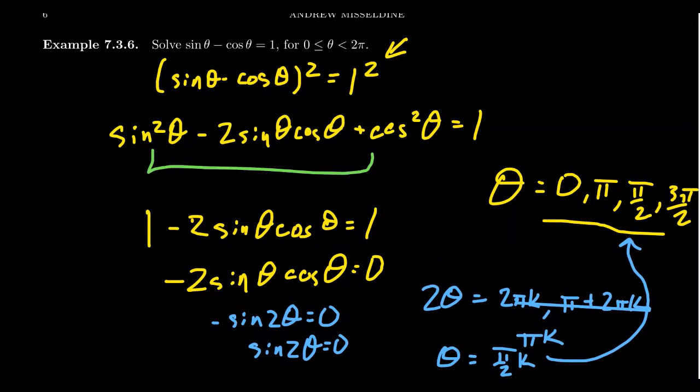If you plug in 0, you're going to get 0 minus 1, which is negative 1. That doesn't work. So 0, we take away. If you try π, you're going to get, for sine, 0. You'll get negative 1. So negative negative 1 is positive 1. That one works out.